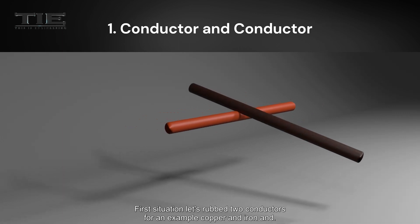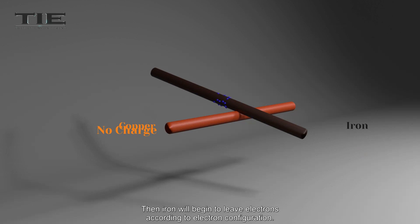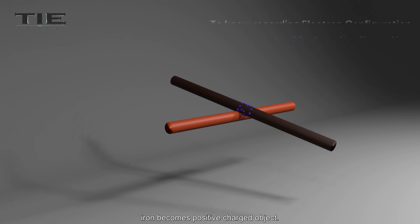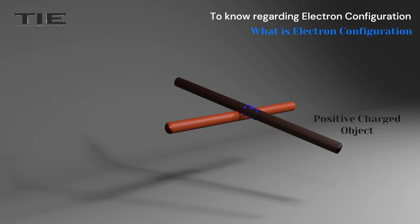First situation: let's rub two conductors, for an example, copper and iron. Then iron will begin to leave electrons according to electron configuration. As soon as the iron conductor leaves electrons, it will have neutralized again. Because at the moment iron is leaving electrons, iron becomes a positive charged object.